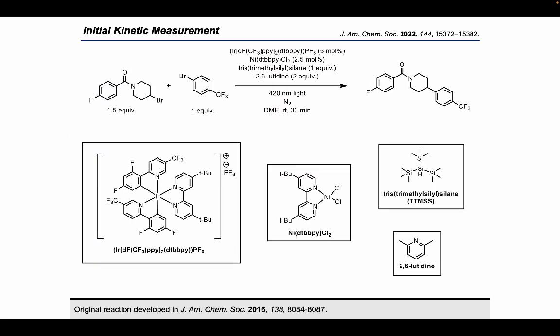So once we had this apparatus assembled, we started studying this model reaction in particular. This is a cross-electrophile coupling. We're reacting an alkyl bromide with an aryl bromide using an iridium photocatalyst, a nickel precatalyst. As well as these two catalysts, we're using one equivalent of this bulky silane and two equivalents of 2,6-lutidine as a homogeneous base. Once the reaction is assembled, we irradiate it and the reaction is over in about 30 minutes, forming this cross-coupled product.